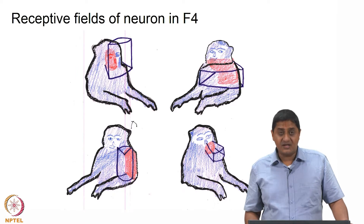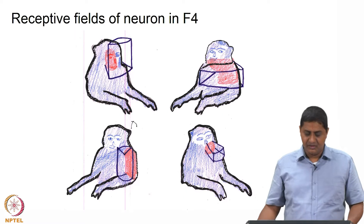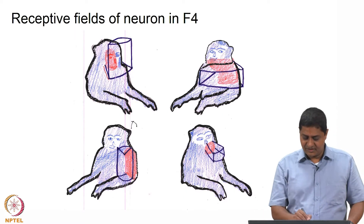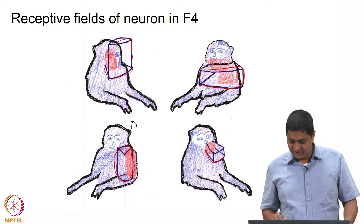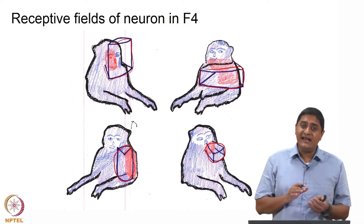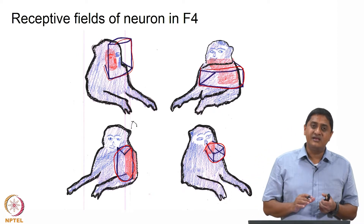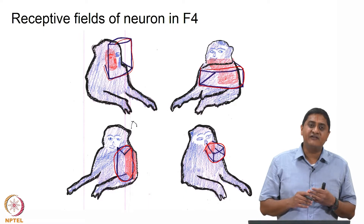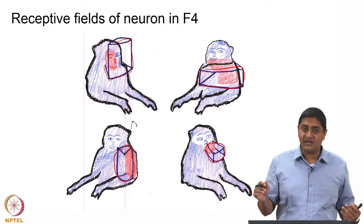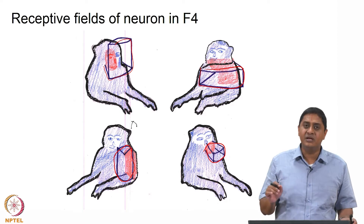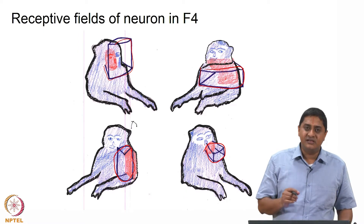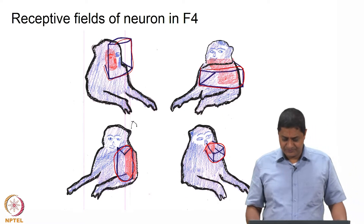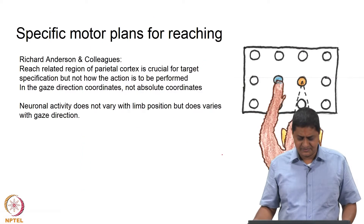Receptive fields of neurons in region F4 can be three-dimensional. These represent receptive fields of different sets of neurons. The net behavior of the organism is a combination of activity of all these neurons — the animal has millions of neurons, and what is presented is the receptive field of a smaller subset of those neurons, just presenting the various possibilities.